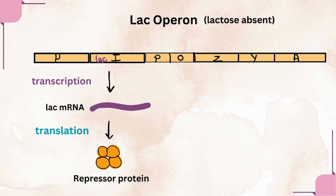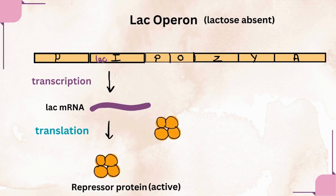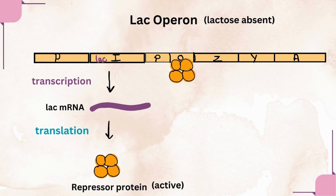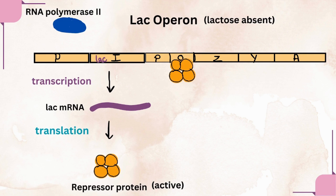If lactose is absent in the medium, the regulatory gene undergoes transcription, resulting in the formation of lac mRNA. This lac mRNA undergoes translation and results in the formation of a repressor protein. The repressor protein is active in the absence of lactose. This active repressor protein binds to the operator, because of which RNA polymerase cannot bind to the lac promoter and transcription of the three structural genes does not take place. Hence, the lac operon is switched off in the absence of lactose sugar.